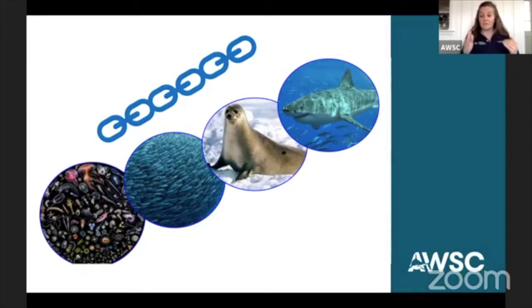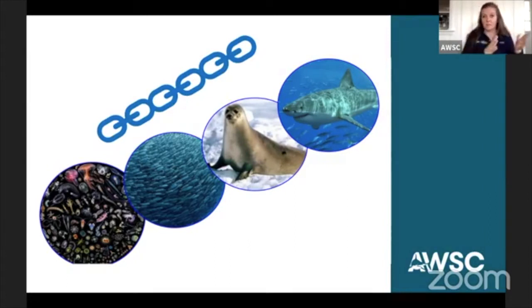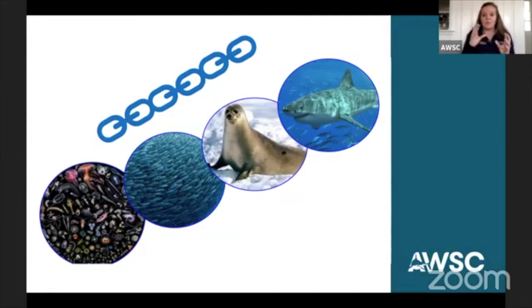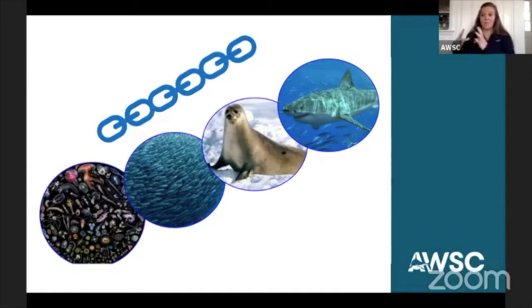This is a basic food chain: a white shark eating seals, seals eating sand lance, sand lance eating copepods — which are animal plankton — and animal plankton eating plant plankton. This demonstrates the visual of what a chain actually looks like. When we look at a food chain, we're looking at how different living things are connected based on what they eat and what eats them.